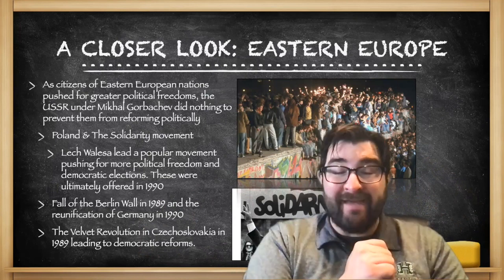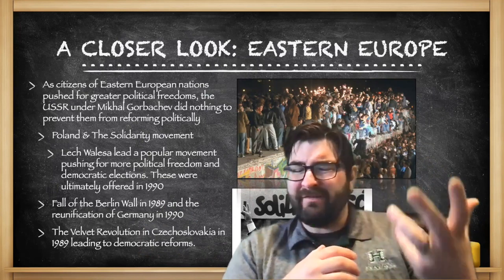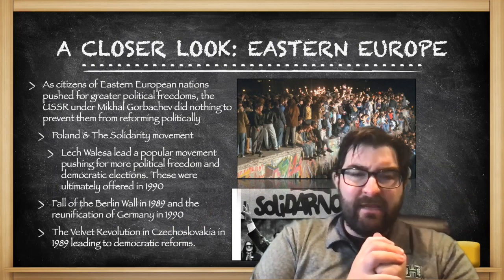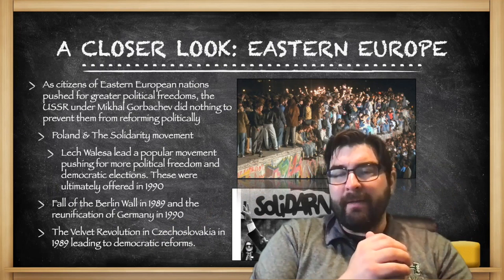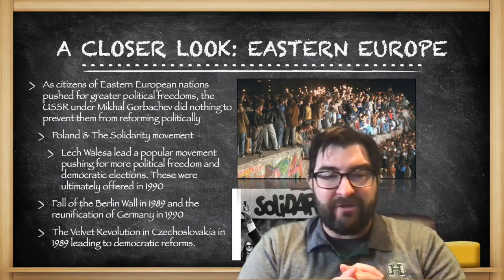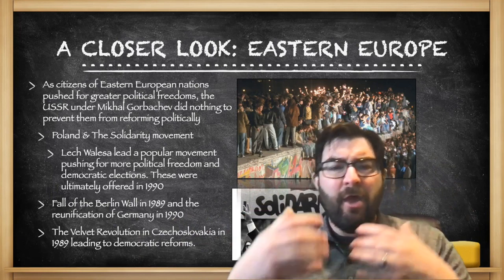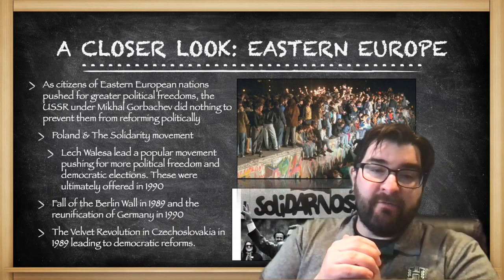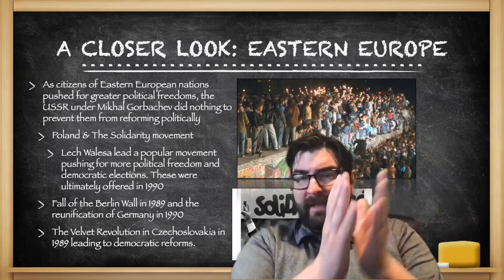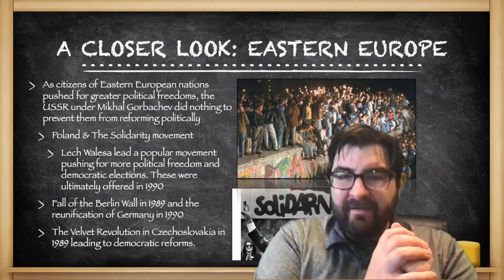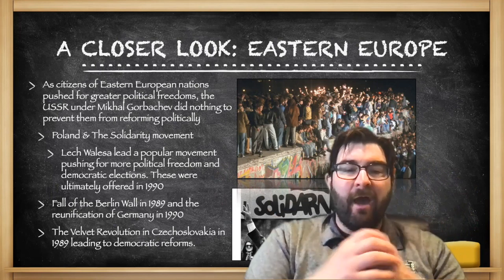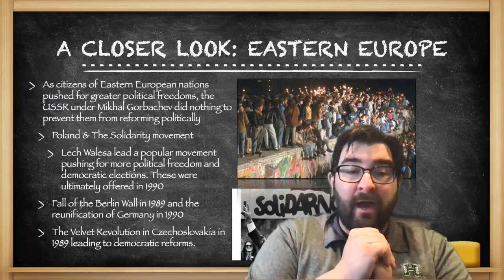Unlike previous attempts at moving to a more democratic government that we saw in Hungary or Czechoslovakia in the 1950s and 1960s, Mikhail Gorbachev was not going to step in. It starts in the 1980s with a man named Lech Walesa in Poland, who led a popular movement known as Solidarity that pushed for more political freedoms and democratic elections. These were ultimately offered in 1990, and Lech Walesa was actually elected president of a new and democratic Poland. In 1989, the Berlin Wall that had been built in the 1960s to divide communist East and capitalist democratic West Berlin was torn down, and East German soldiers just let it happen. The reunification of East and West Germany came officially in 1990.